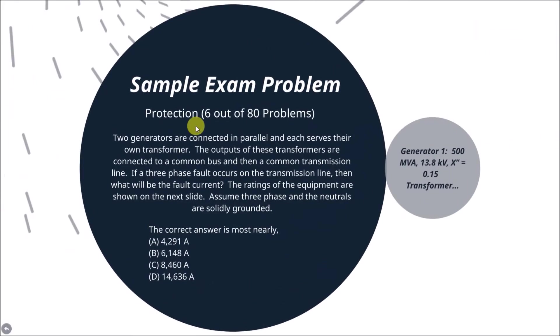Two generators are connected in parallel and each serves their own transformer. The outputs of these transformers are connected to a common bus and then a common transmission line. If a three-phase fault occurs on the transmission line, then what will be the fault current. The ratings of the equipment are shown on the next slide and you can assume the circuit is three-phase and the neutrals are solidly grounded.